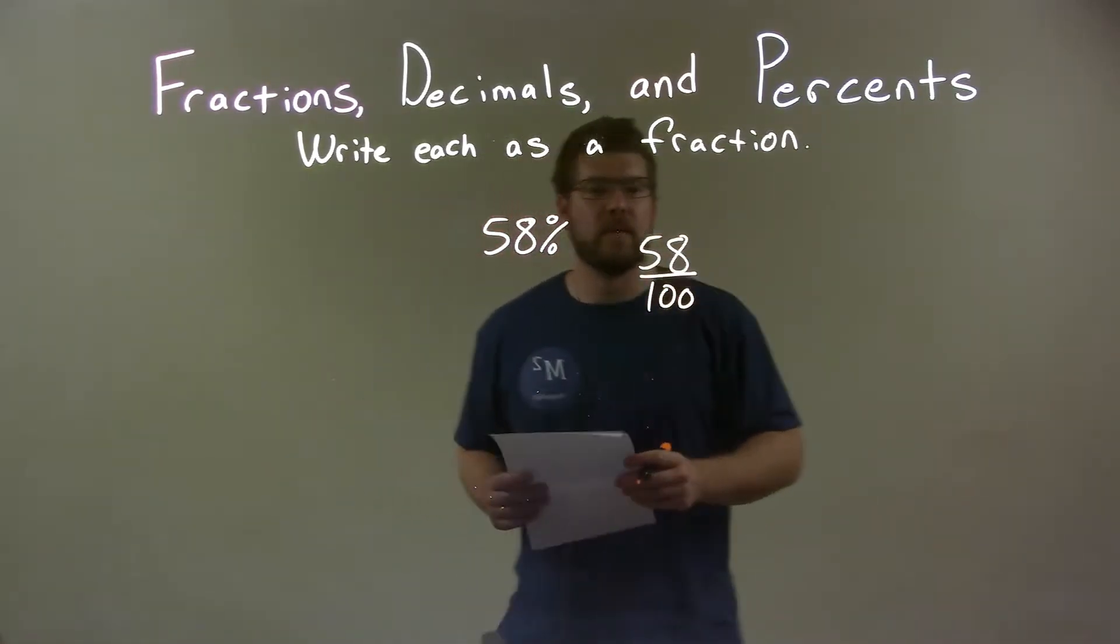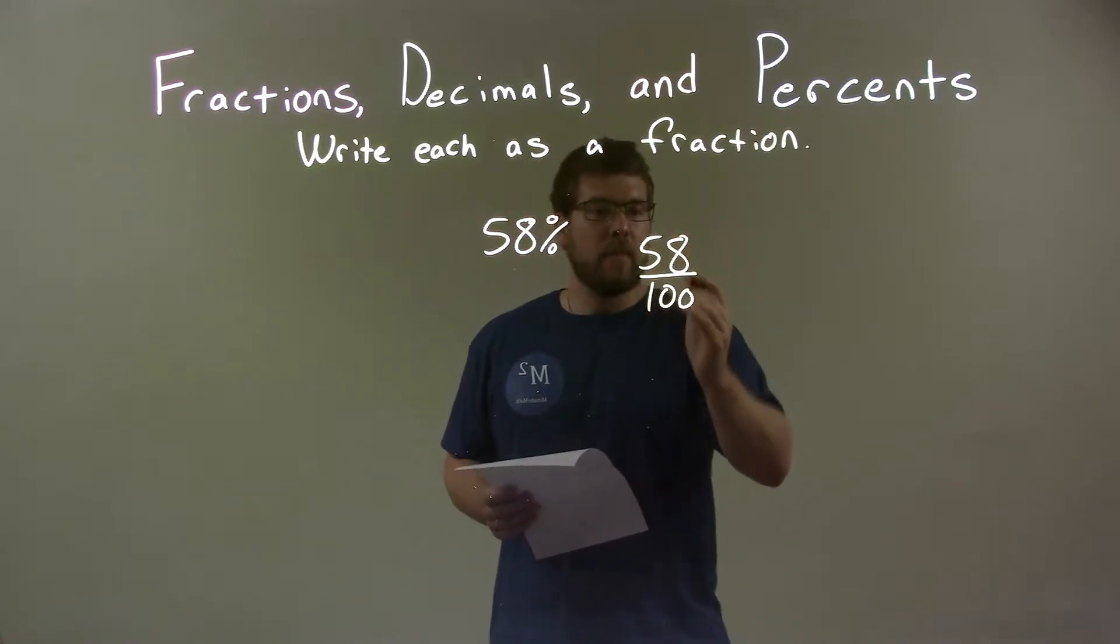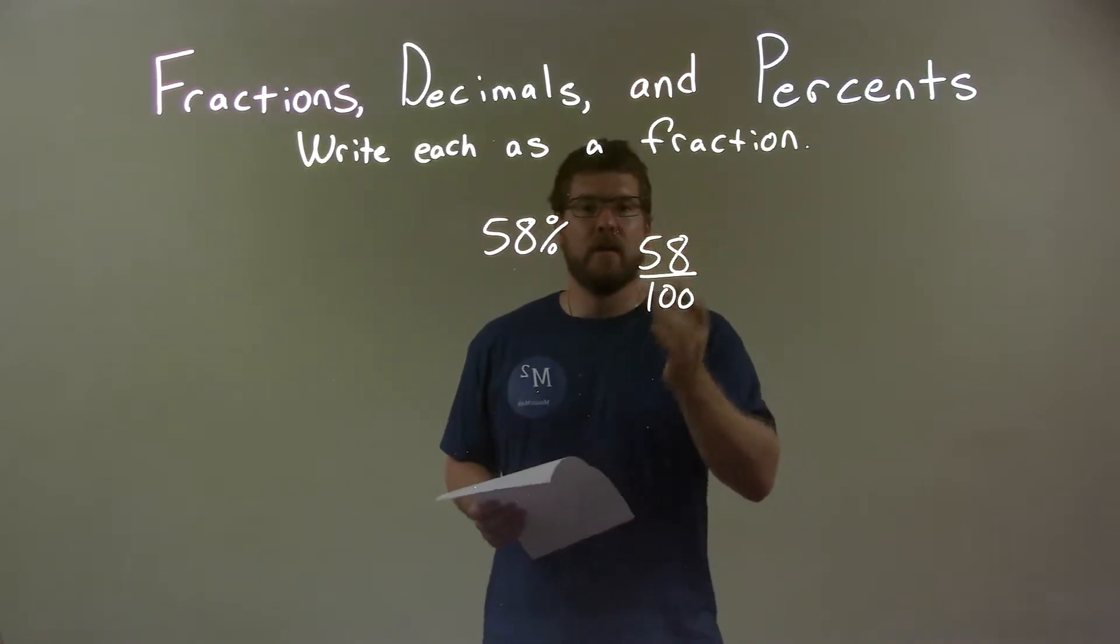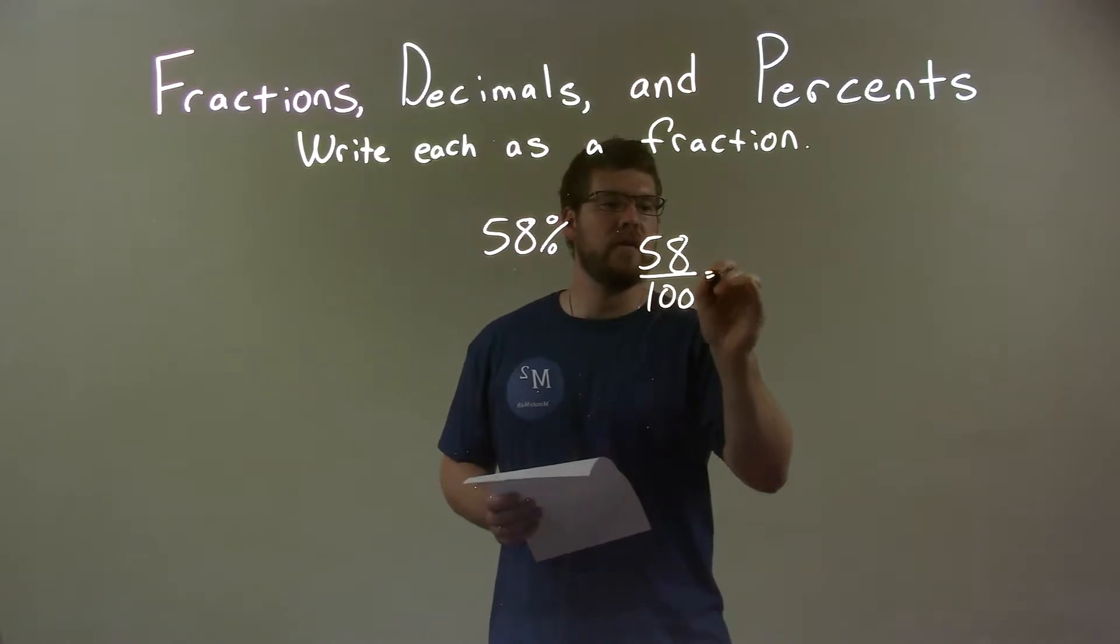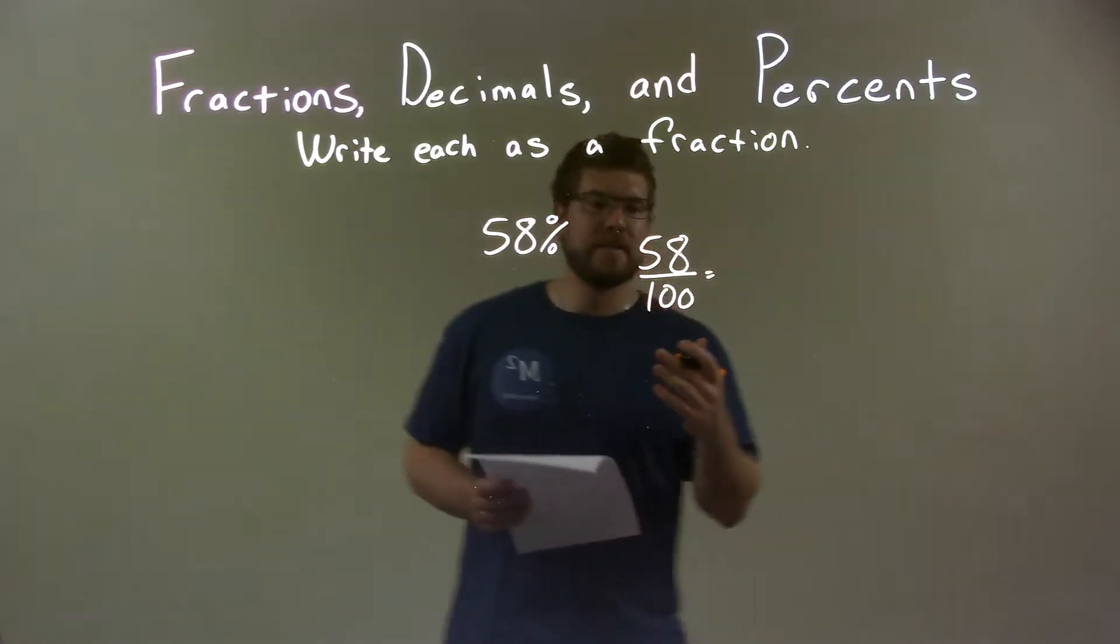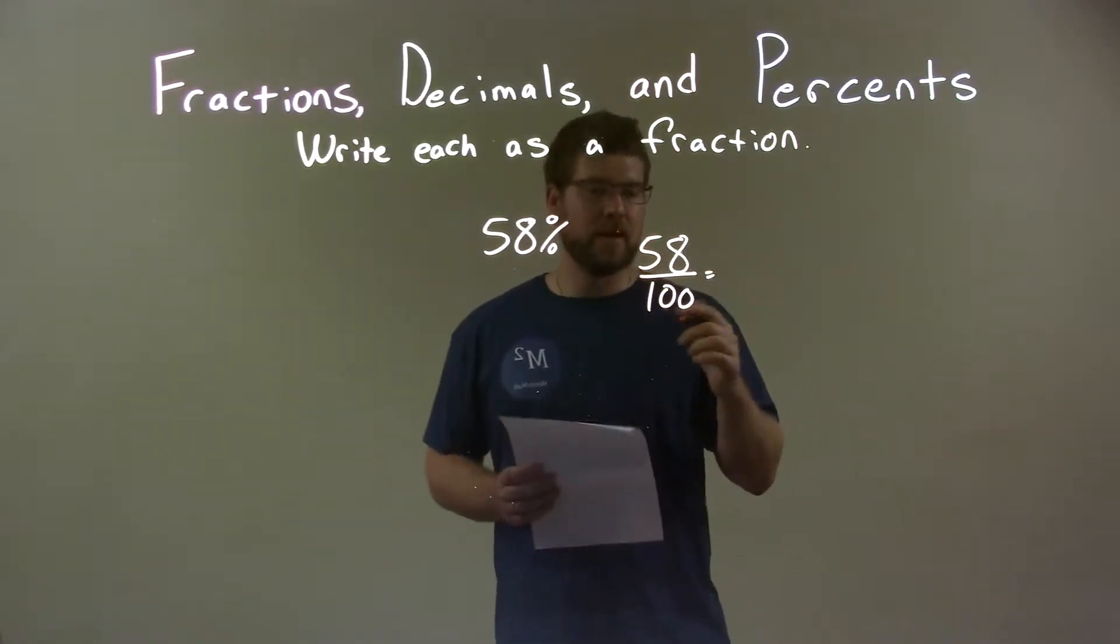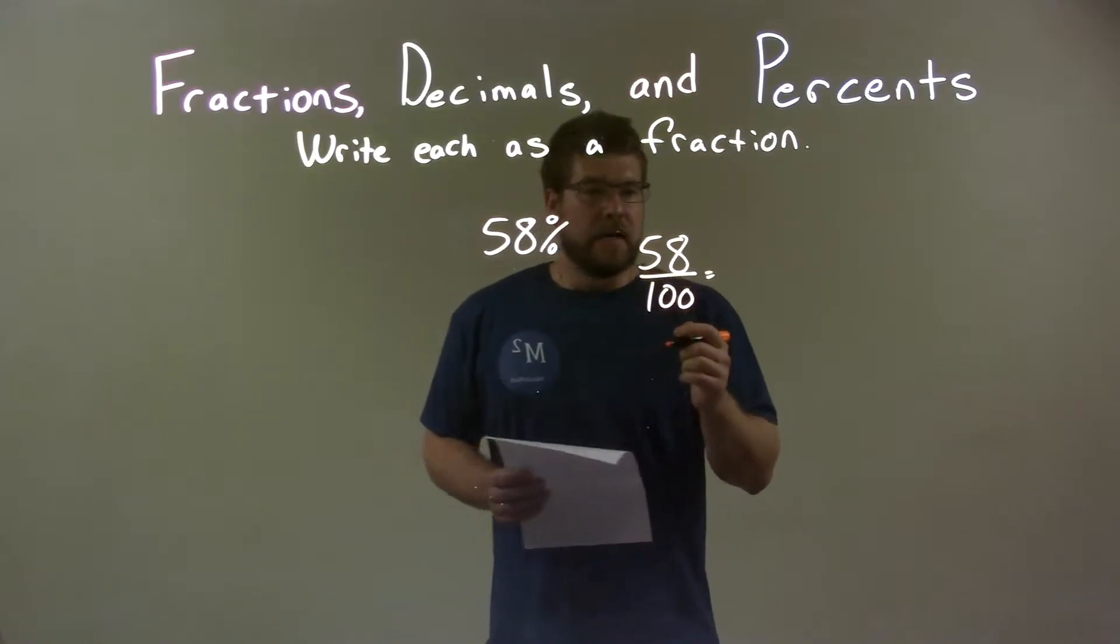Well we can simplify this. We can see that both are divisible by 2. 58 and 100 are both even. So that's a good way to do it. Well 58 breaks down to be, divided by 2 comes out to be, oh what is that?